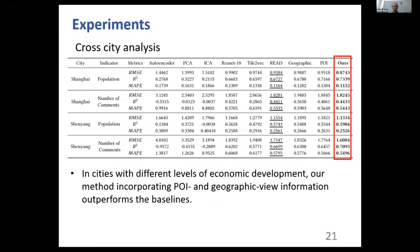We show the experiment results of the generalization ability test of our proposed model. We conduct experiments with another well-developed city, Shanghai, and an underdeveloped city, Sheyang, in China. We apply the trained model on Beijing to the satellite images of Shanghai and Sheyang, and use the representations to predict the corresponding socio-economic indicators. Even though these two cities have different levels of economic development, our contrastive learning method with the attentional model still outperforms the baselines.